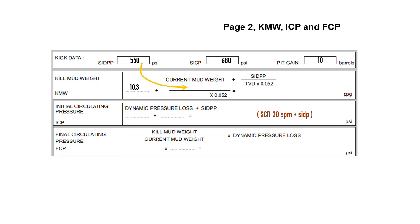Now we go to page 2. Using current mud weight 10.3, shut-in drill pipe pressure 550, and well TVD 6453, we can calculate our kill mud weight. The result is 11.939 ppg, rounded up to one decimal place, giving us 12.0 ppg. The SCR at 30 SPM is 340, so our ICP is 340 plus 550, equal to 890 psi.